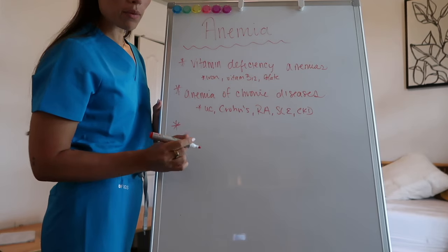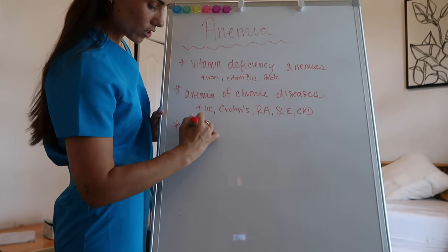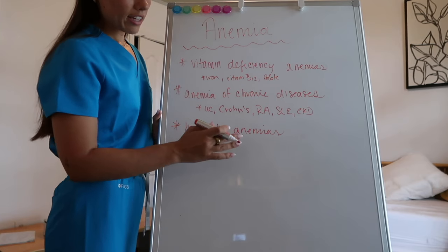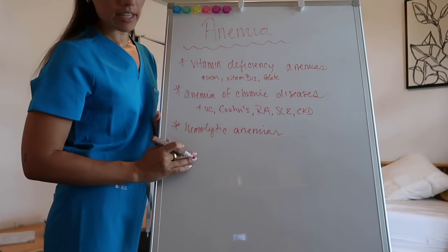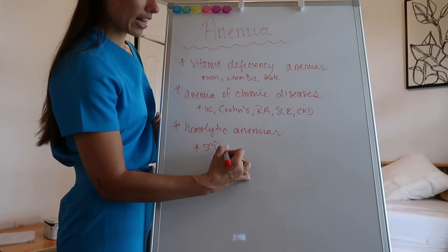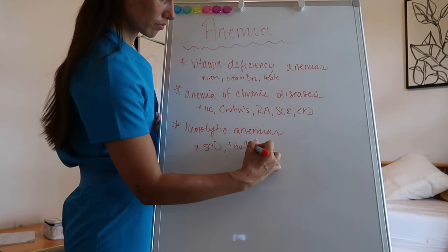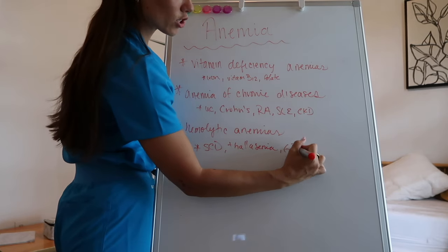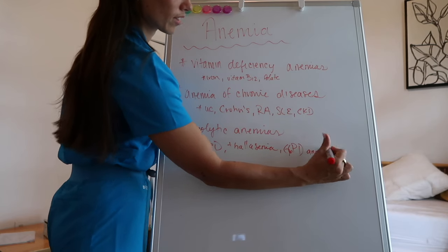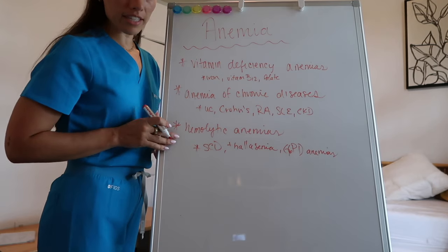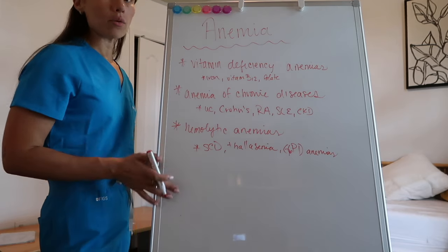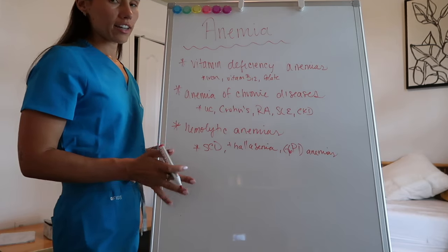And then the last one we are going to briefly talk about is your hemolytic anemias. Hemolytic anemia is an anemia in which the red blood cells are being destroyed. So those are your sickle cell disease, your thalassemia, your G6PD deficiency anemias, et cetera. We're going to briefly talk about these because a lot of times these are diagnosed in childhood and we are covering adult right now.